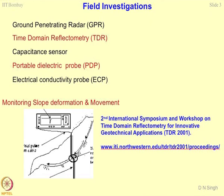The cable is going to deform. Because of deformation of this cable, the impedance of the cable is going to change. So if you can measure over a period of time how the impedance of the cable is changing, you can estimate whether slopes are stable or not. Using this concept, some people have installed TDR cables in the Konkan belt, particularly for Konkan railways.